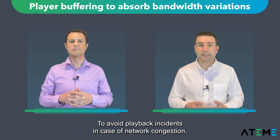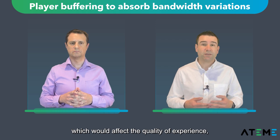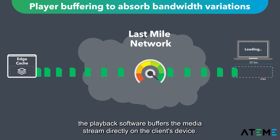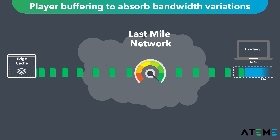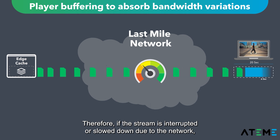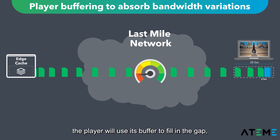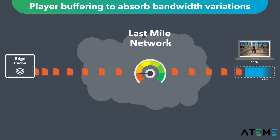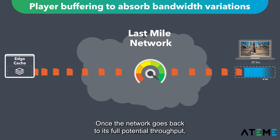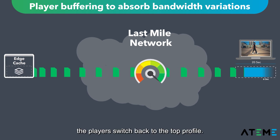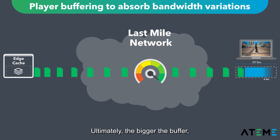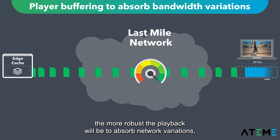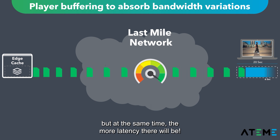To avoid playback incidents in case of network congestion, which would affect the quality of experience, the playback software buffers the media stream directly on the client's device. Therefore, if the stream is interrupted or slowed down due to the network, the player will use its buffer to fill in the gap while switching to a lower profile. Once the network goes back to its full potential throughput, the player switches back to the top profile. So ultimately, the bigger the buffer, the more robust the playback will be to absorb network variations — but at the same time, the more latency there will be.